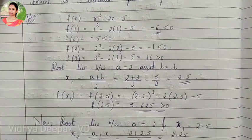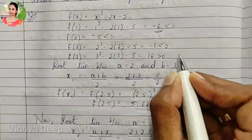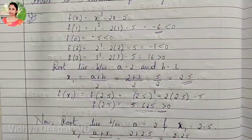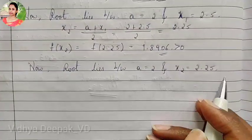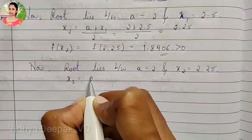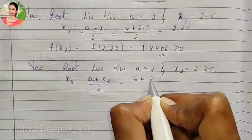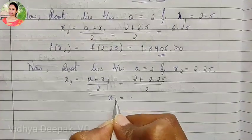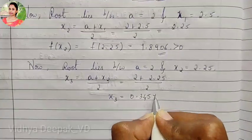f of 2.25 is 1.8906, which is greater than 0. The previous negative number was f(2) which is minus 1, so again a equals 2. The root now lies between a equal to 2 and x2 equal to 2.25. Our formula gives x3 equal to a plus x2 by 2, that is 2 plus 2.25 divided by 2, giving x3 equal to 2.125.